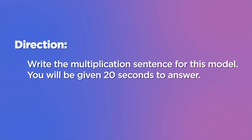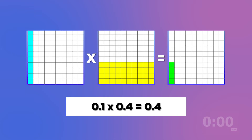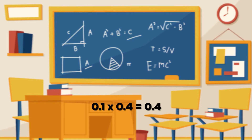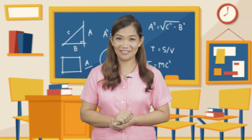This time, let's check your understanding of our lesson. In this activity, we are going to write the multiplication sentence for the model shown. Ready? Let's start! What is your answer, kids? Let's see! 0.1 x 0.4 equals 0.04. Is your answer correct? Well done!